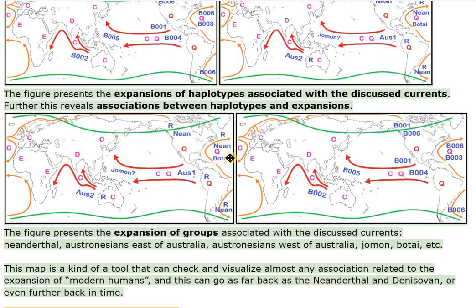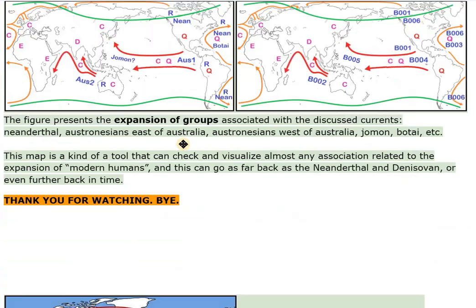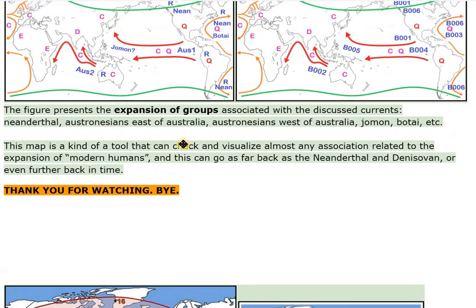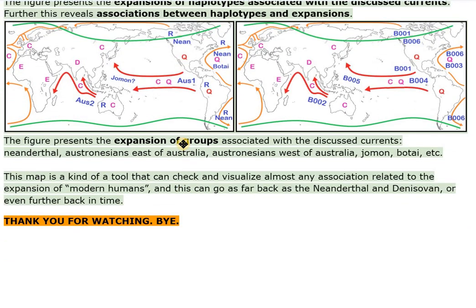The figure presents the expansion of groups associated with the discussed currents, including Neanderthal, Austronesians east of Australia, Austronesians west of Australia, Jamon, Bwutai, and others. This map is a kind of tool that can check and visualize almost any association related to the expansion of modern humans, going as far back as the Neanderthal and Denisovan, or even further back in time.